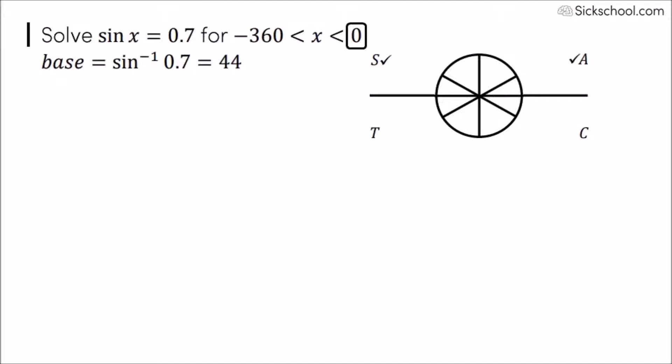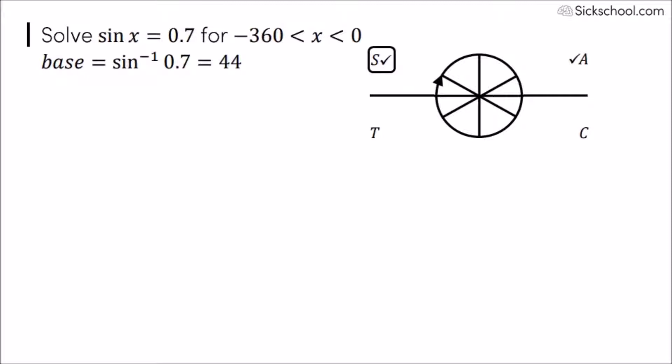Begin at zero. Here, first stop: minus base angle, that is minus 44 — no tick, no answer. Minus 180 plus 44 — no tick, no answer. Minus 180 minus 44 — tick, so this is an answer.